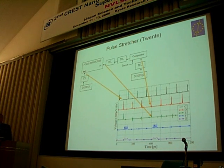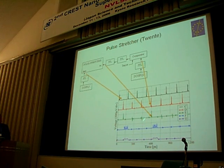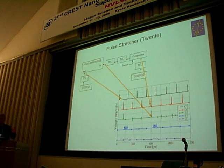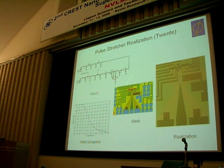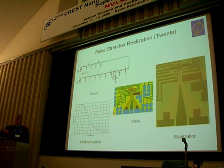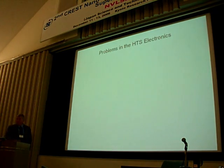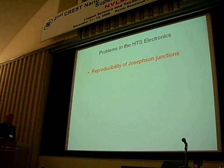We also needed to couple this very fast device to semiconductor electronics. These are the RSFQ pulses in the simulation, and this is the output pulse stretched so that semiconductors can work on it. This is a circuit with just 20 junctions, and nearly every circuit that we made worked. So there is a critical limit, at least in our technology, somewhere between 20 and 50 junctions — we can make circuits below that, and above it things don't work at all. Yet we need something of the order of 100 junctions. So what is the problem?